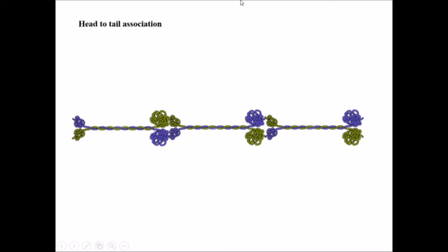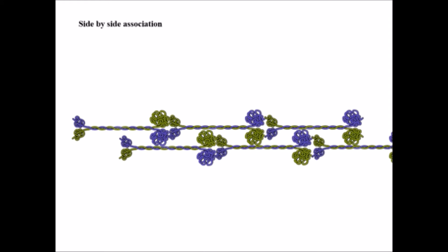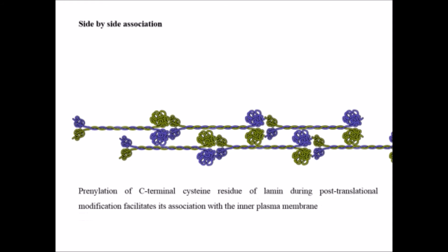The coiled-coil structure undergoes head-to-tail association, where the head portion associates with the tail repeatedly: head-tail, head-tail. In the second stage, side-by-side association occurs, forming the complex structure called nuclear lamina. This nuclear lamina undergoes post-translational modification so it can specifically associate with the inner membrane of the nucleus, due to prenylation at the C-terminal of the cysteine residue in lamins.